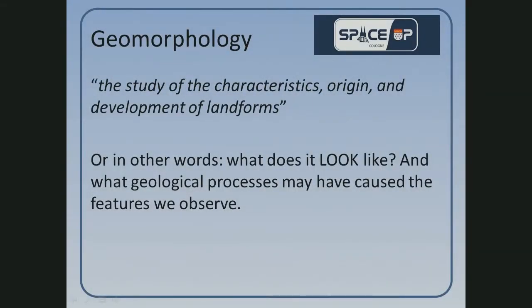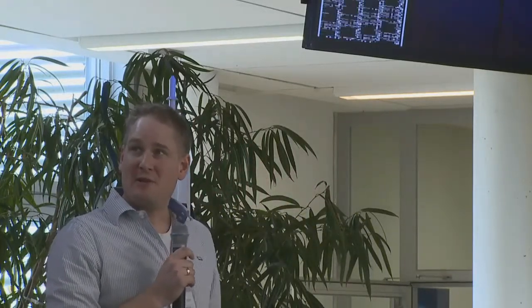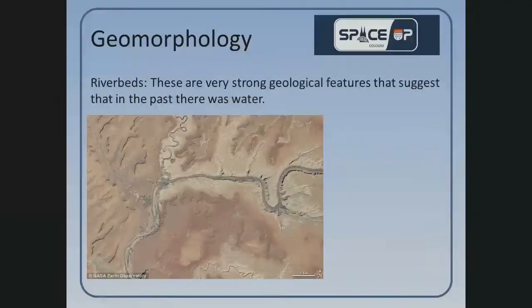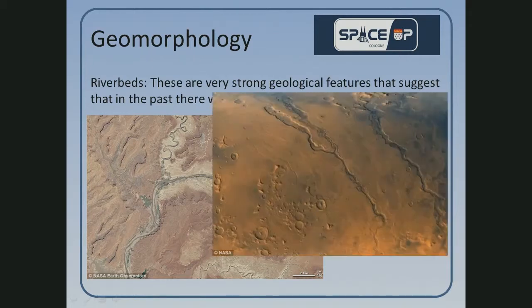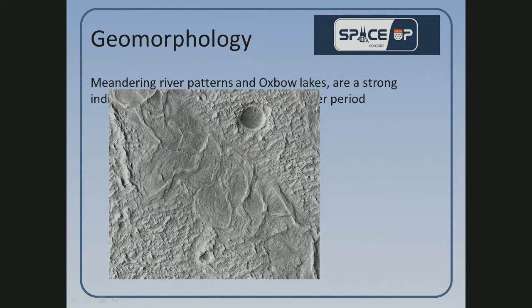I start with an easy one - the most visual method in geology. It's called morphology. Basically, if it looks like something, it probably is that thing. So what do we see on Mars? Rivers. This is actually a picture of planet Earth, of a desert - they look quite similar. So we can safely deduce this is a riverbed. Are we 100% sure? No, it may be something other than water, so we have to look for other clues. We can see there has been something flowing - this is a meandering river, and if you see structures like these you know a fluid has moved them.